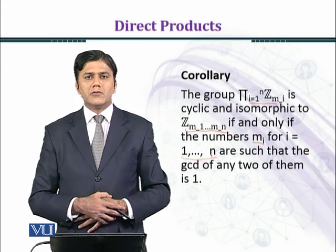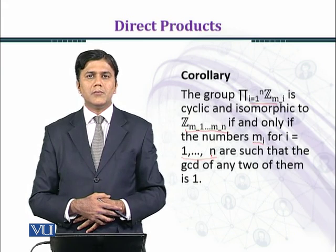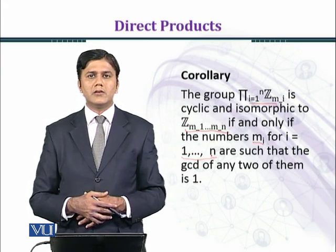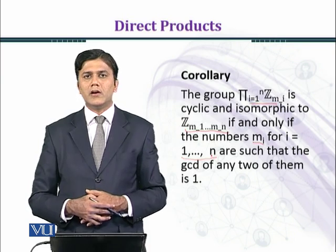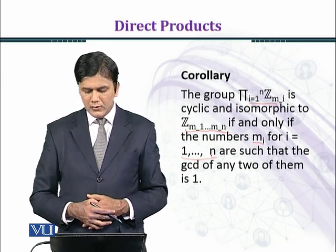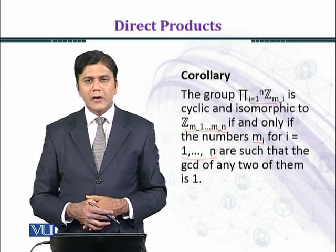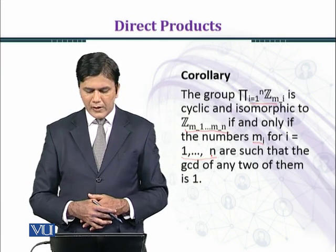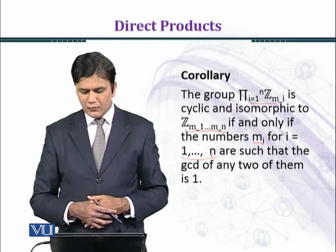This corollary follows from the previous theorem. The key condition is that if GCD(m_i, m_j) = 1 for all i ≠ j, then the direct product of Z_m_i for i equal to 1 to n is isomorphic to Z_(m1 · ... · mn).